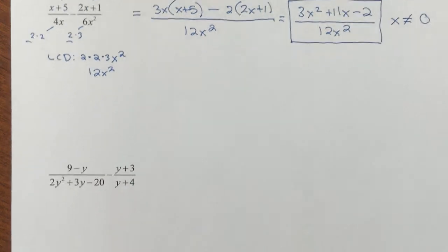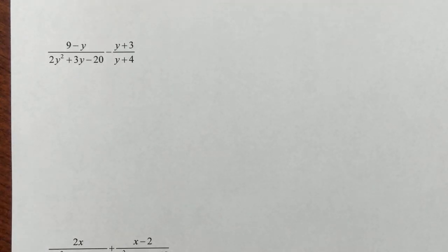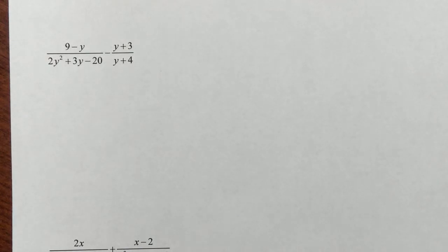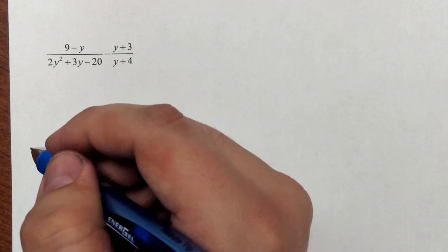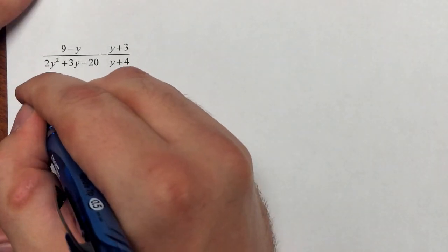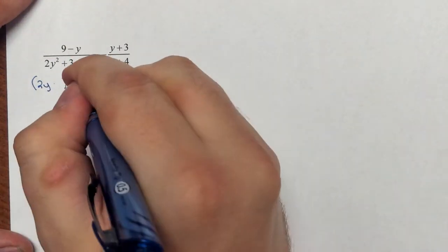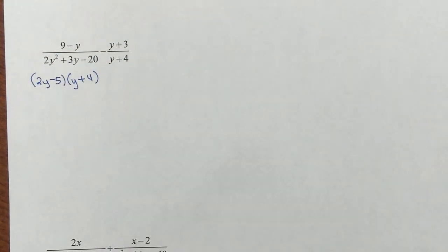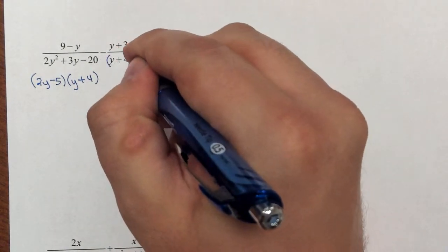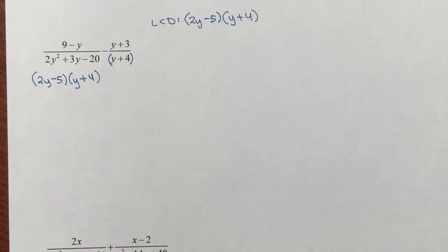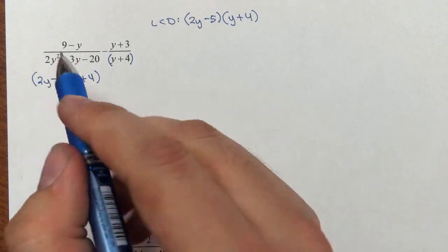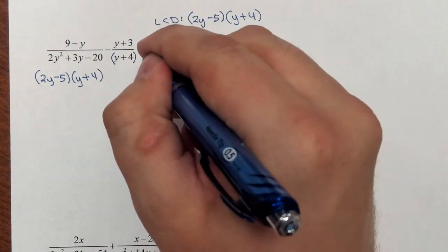A little bit more complicated now — a denominator that actually has to be factored. I have to find an LCD, which means I need to factor 2y² + 3y − 20. I need factors of −40 that add to 3, which is +8 and −5. That gives me (2y−5)(y+4). With both denominators factored, I can tell what the LCD is: I need 2y−5 and y+4. The first expression already has both of those factors. The second expression needs 2y−5.